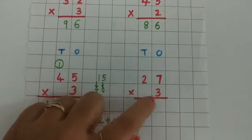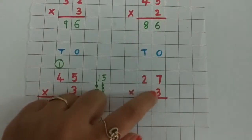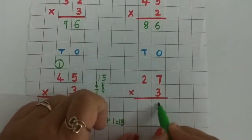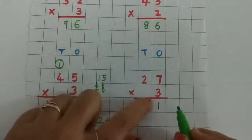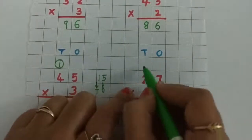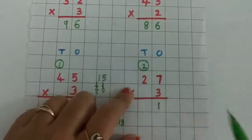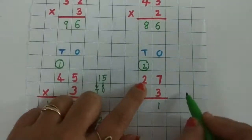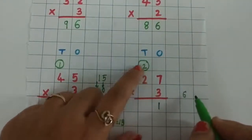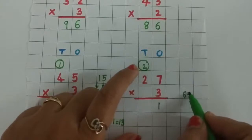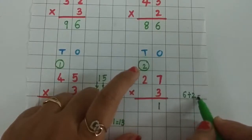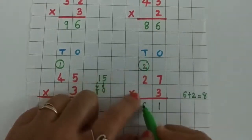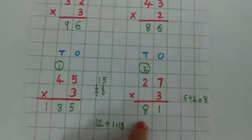27 multiply by 3. 3 sevens are 21. So write 1 below the 1's column and carry over 2 on the 10's column. 3 twos are 6, and 6 plus carry over 2 you have to add. So 6 plus 2 is 8. Write 8 below the 10's column. Our answer is 81.